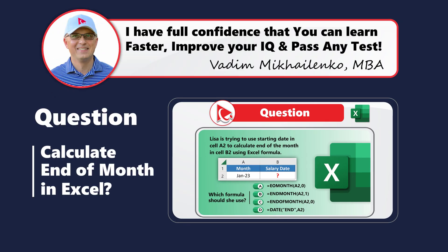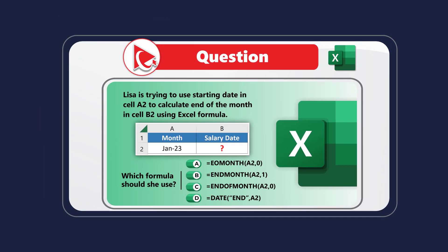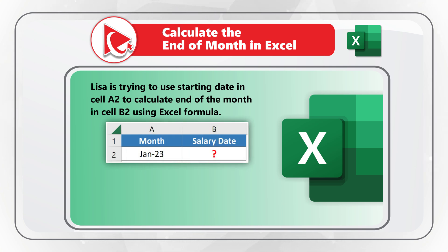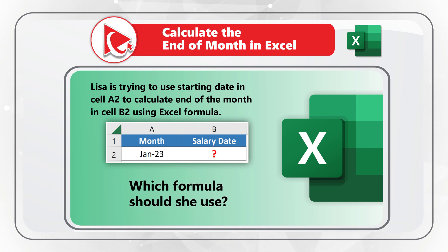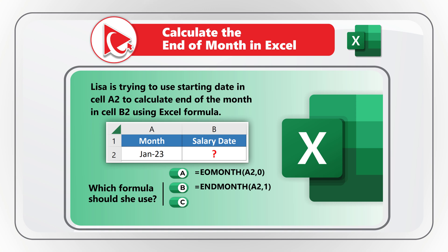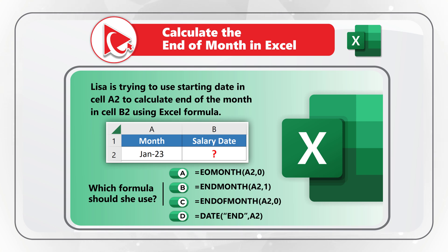Here's a wonderful question to test your knowledge of Excel formulas. Lisa is trying to use the starting date in cell A2 to calculate the end of the month in cell B2 using an Excel formula. She is presented with four choices: choice A, EOMONTH with arguments A2, 0; choice B, MONTH with arguments A2, 1; choice C, END OF MONTH with arguments A2, 0; and choice D, DATE with arguments in quotes, A2.